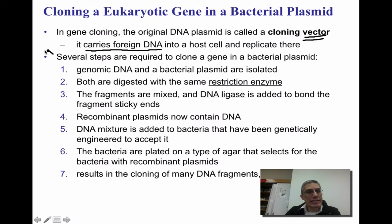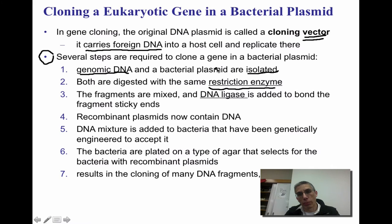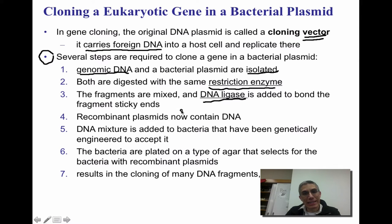These are going to be the complete steps of getting that gene into that bacteria plasmid. We're going to have our genomic DNA and a bacteria plasmid that are isolated from each other. The reason they're isolated is because we're going to expose both the genomic DNA and the isolated plasmid to the same restriction enzymes, because we want the same cuts to be made. In step three, we're going to take the genomic DNA and the bacteria plasmid that have been cut, mix them together, and add DNA ligase to bond those fragmented sticky ends together.